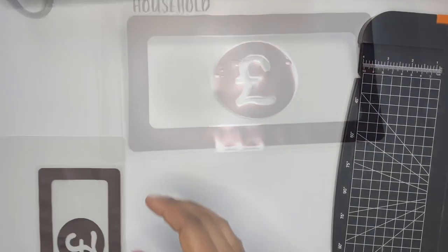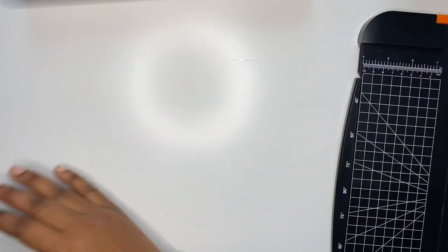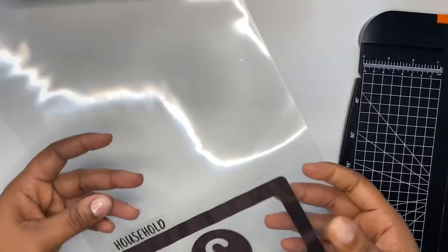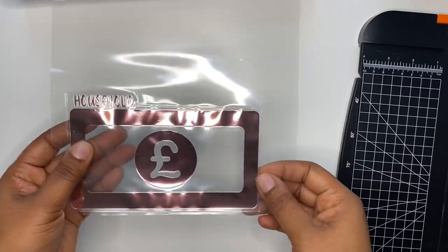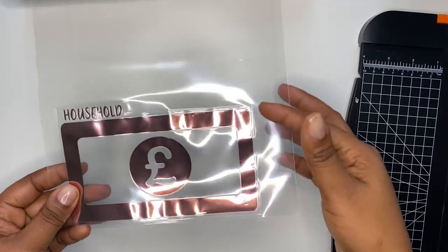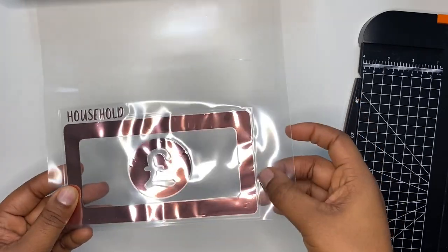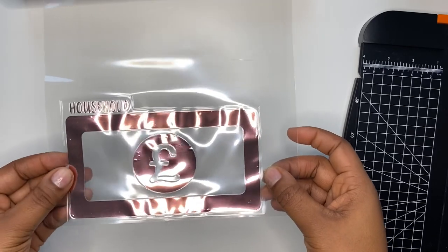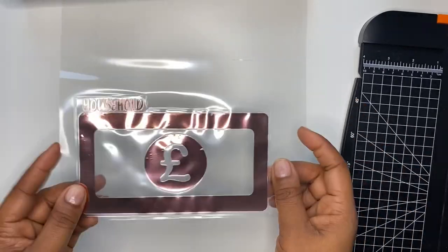So I have passed my envelope through the laminator. I'm just going to cut around this edge. I do need to leave a little bit of a gap so that I don't cut into the actual seam, and then let's see if it actually works.